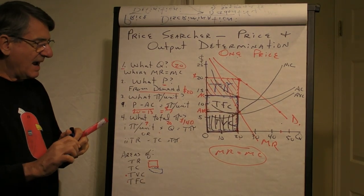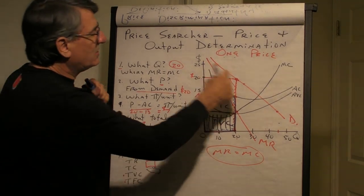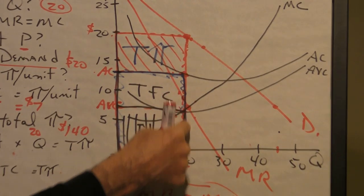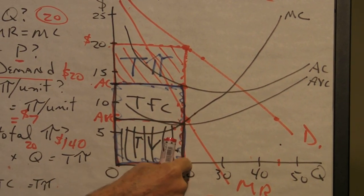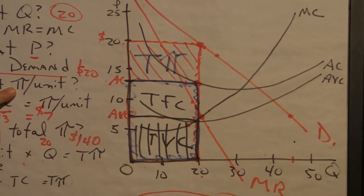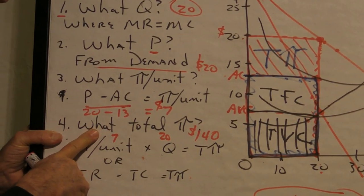So, there we have it. Price searcher, one price, that's the marginal revenue curve. You find the quantity where marginal revenue equals marginal cost, that tells you the quantity to produce. Go up to the demand curve, that tells you the price.